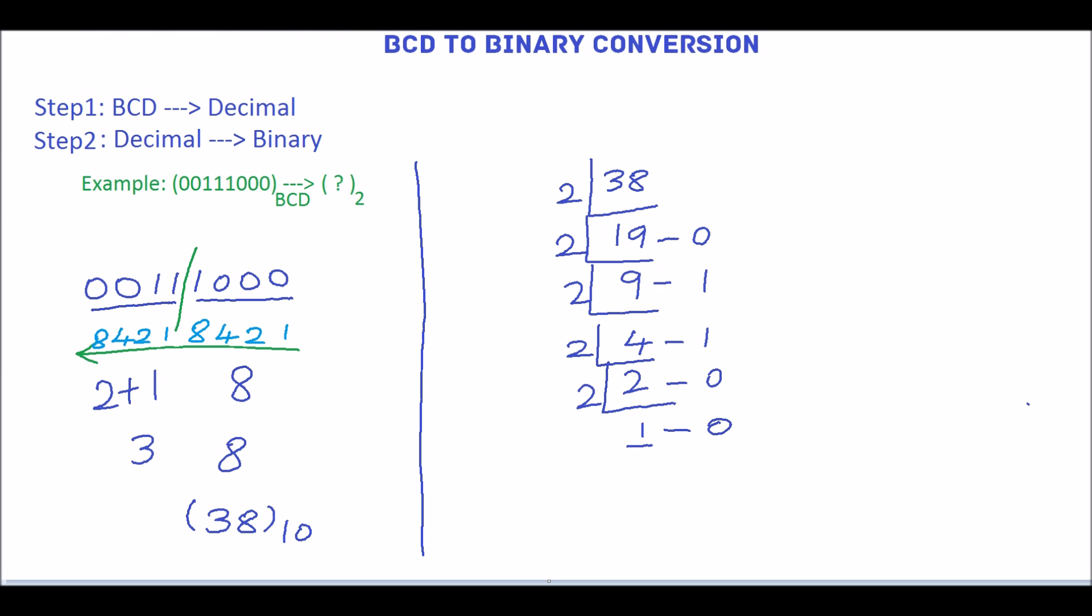Now the quotient is 1 which is less than 2, so we can stop the division and write the answer from bottom to top. So the answer is 100110, this is the equivalent binary number for the decimal number 38.